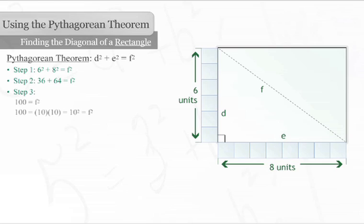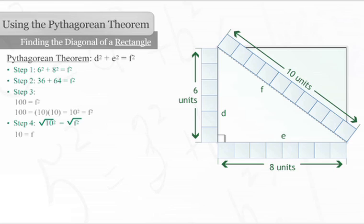100 equals 10 times 10 or 10 squared. By taking the square root of both sides, we find that f equals 10. The hypotenuse, which is the same as the diagonal of the rectangle, is 10 units long.